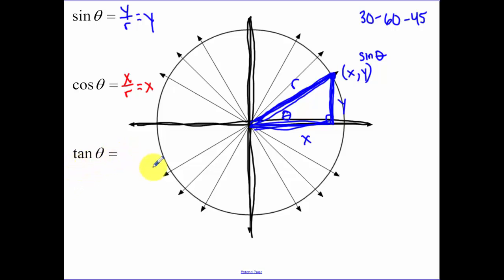Now tangent is opposite over adjacent. So that's going to be y over x. Or we could also look at that as sine over cosine. Now again, the x value, this x point gives us the cosine of theta at this point. The y value gives us the sine value.